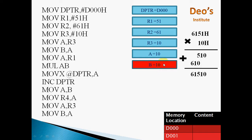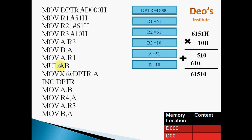Now we have 10H in the B register. We will first perform 51 multiplied by 10. So we have 10 in B register, and now we need to take 51 into the A register. Since 51 is in R1, we use MOV A, R1 — so 51H will be moved to A register. Now we have 51 in A and 10 in B. We will perform the next operation: MUL AB. MUL is the instruction for multiplication.